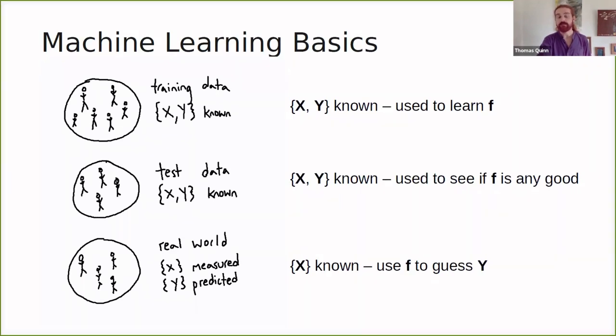And if it is, we might then take it out into the real world where Y is not known, but X can easily be measured. And then we can use the function F to guess Y. And if the outcome is something that occurs in the future, then this is a model that we can use to try to predict the future event.